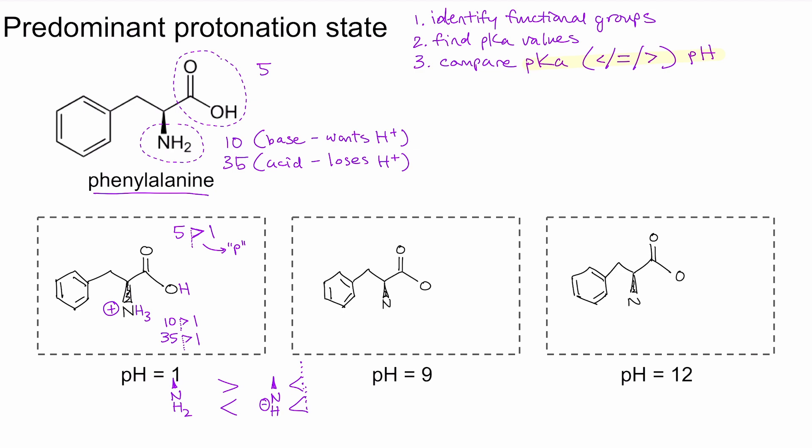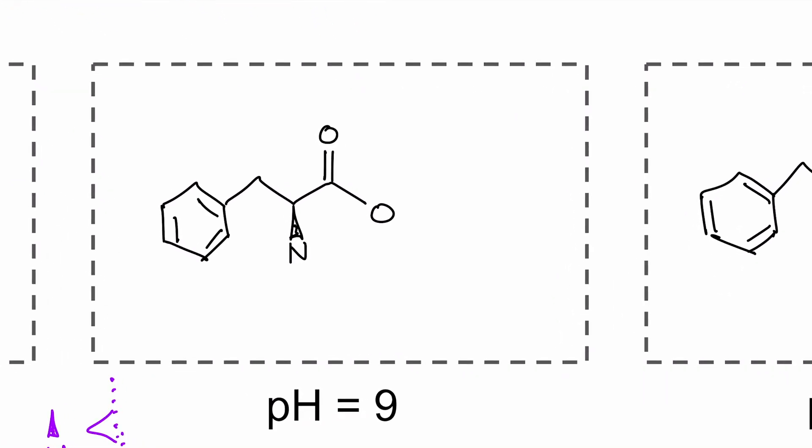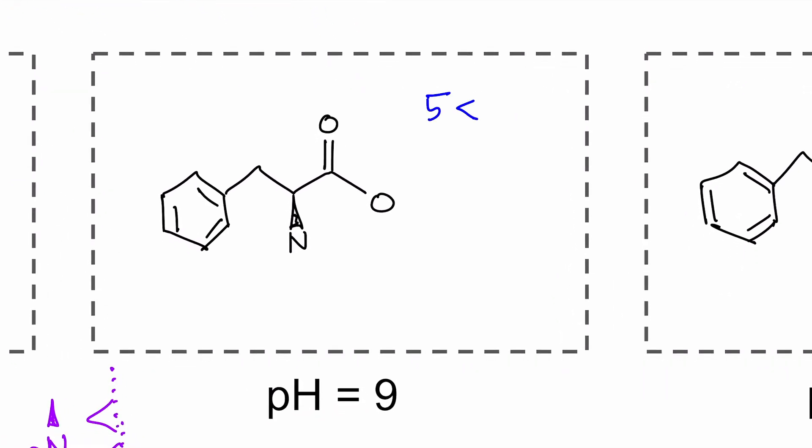For pH 9, let's start by comparing carboxylic acid. 5 is less than 9. And if you draw a dotted line here, it looks like a D, which stands for deprotonate. So that means we're going to get a deprotonated carboxylic acid. For the amine, 10 is greater than 9, and 35 is also greater than 9. These both point to the amine getting protonated. So we say H3 and give nitrogen a plus charge.